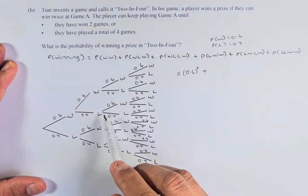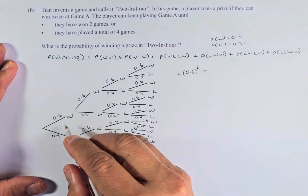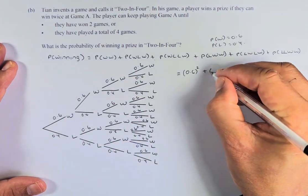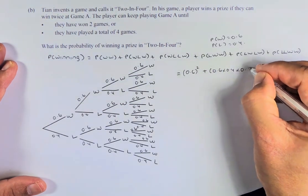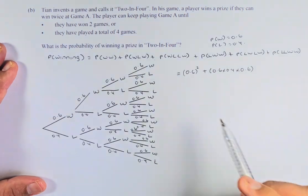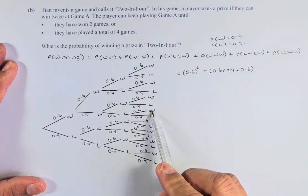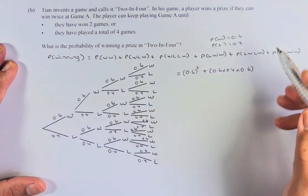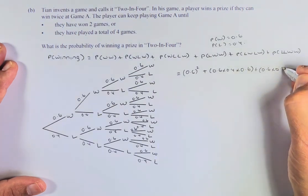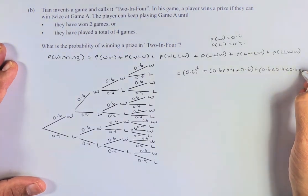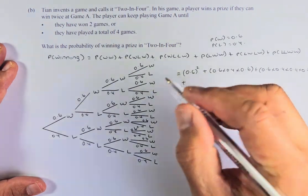Then we add the next one, win-lose-win. We got 2 wins, it's also a win. So the probability is 0.6 times 0.4 times 0.6. The next possible outcome is win-lose-lose-win. So it's going to be 0.6 times 0.4 times 0.4 times 0.6. So now it's quite easy. We're going to keep on going.